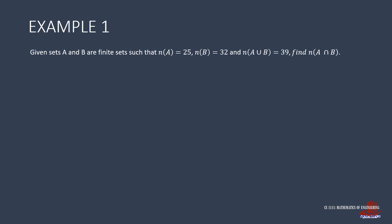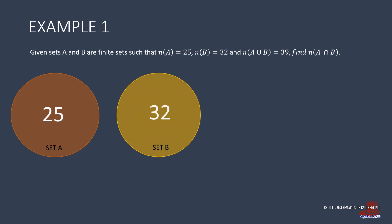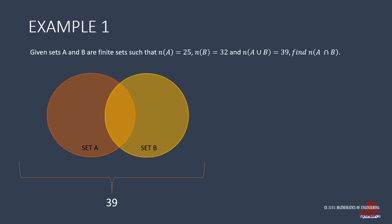First, we visualize the situation using circles. Set A has 25 elements. Set B has 32 elements. The problem states that there are only 39 elements in all. This is smaller than the two sets added together, as 25 plus 32 gives 57. This just means that the two sets are overlapping.